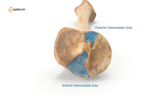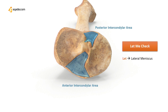The mnemonic for the muscle and ligament attachments to the posterior intercondylar area is: L for lateral meniscus, M for medial meniscus, and C for the cruciate ligament. Remember that the posterior horns of the lateral meniscus, medial meniscus, and cruciate ligament all attach to the posterior intercondylar area.